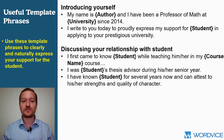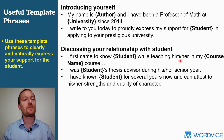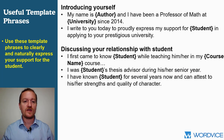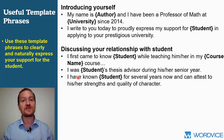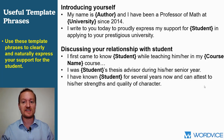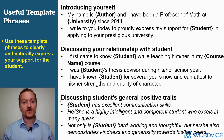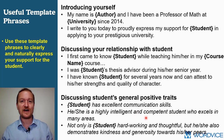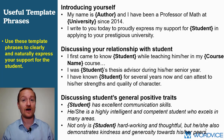For discussing your relationship with the student: 'I first came to know the student while teaching him/her in my anthropology course.' Or: 'I was Jane Doe's thesis advisor during her senior year.' Or: 'I have known Jane Doe for several years now and can attest to her strengths and quality of character.' For positive traits: 'Jane Doe has excellent communication skills.' 'She is a highly intelligent and competent student who excels in many areas.' 'Not only is Jane Doe hardworking and thoughtful, but she also demonstrates kindness and generosity towards her peers.' Always follow these with concrete details.